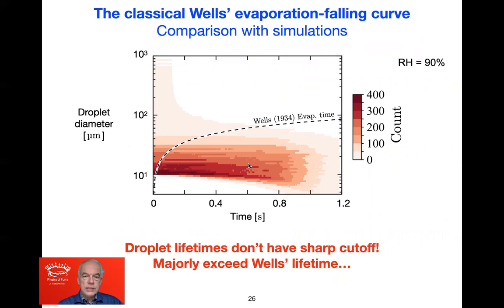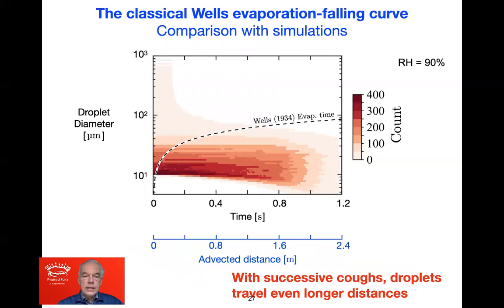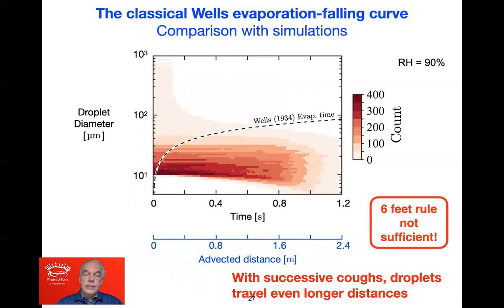The droplet count is in fact at a maximum, and they exist much, much longer. The majority, in fact, exceeds the Wells lifetime. Translating this time into distance, you get up to 2.4 meters, and with excessive coughing it is much longer. Clearly, the six feet rule is not sufficient.